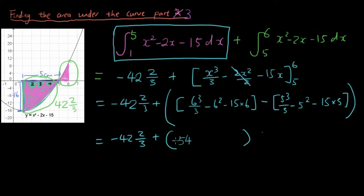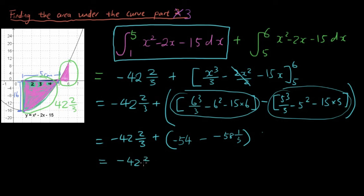So we have -54, which is this section here, and that will give us -48⅓, which is this section here, and that will give us -42⅔ plus 4⅓.